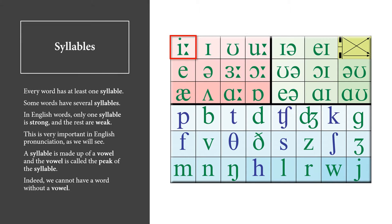Syllables. Every word has at least one syllable. Some words have several syllables. In English words, only one syllable is strong, and the rest are weak.